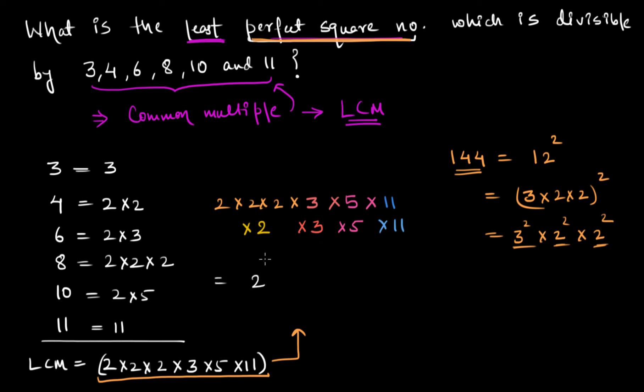So now this becomes 2 to the power 4 times 3 square times 5 square times 11 square. This is the least possible perfect square number that will be divisible by all these numbers given here.